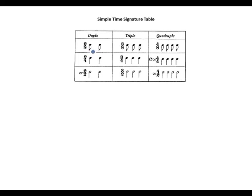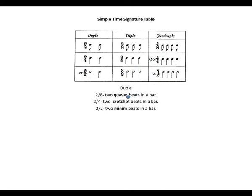The simple time table: for duple — two-eight means two quavers; for triple — three-eight means three quavers in a bar; for quadruple — four-eight means four quavers in a bar. Then in two-four we have two crotchet beats in a bar; three-four means three crotchet beats in a bar; and four-four, the same as common time, has four crotchet beats in a bar. For minims: two-two means two minim beats in a bar; three-two means three minim beats in a bar.